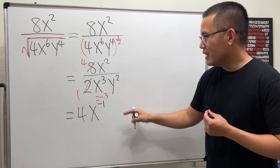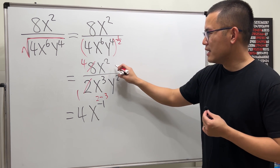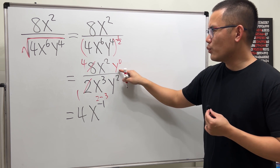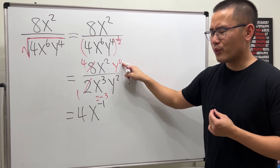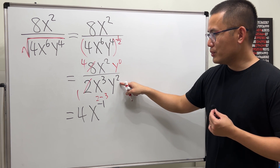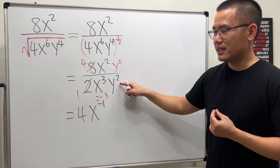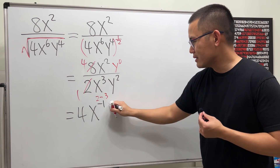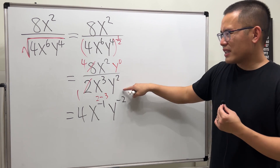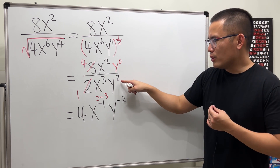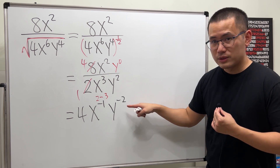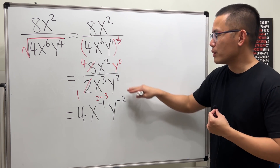Now for y — there's no y on top, so that's y to the 0 power. We do 0 minus 2, which is negative 2. So we have y to the negative 2. That's how we end up with a negative 2 power.